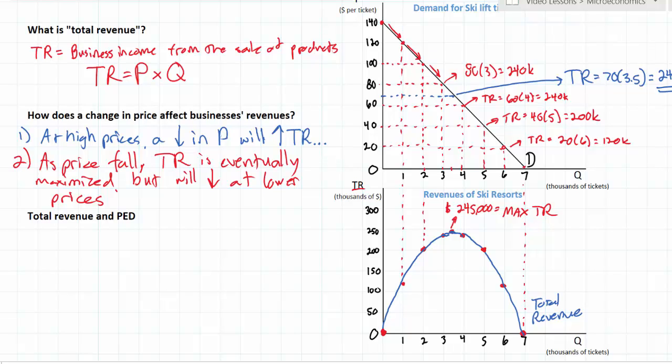So what does all of this have to do with price elasticity of demand? You may be wondering, well this video is supposed to be about PED. So far you've only taught us what total revenue is and you've taught us that total revenues of industries will rise and then fall. That's kind of obvious. There must be some price at which firms' total revenues are maximized.